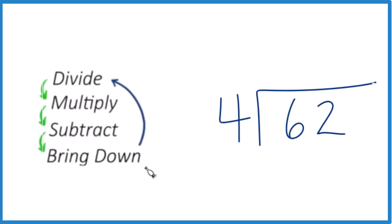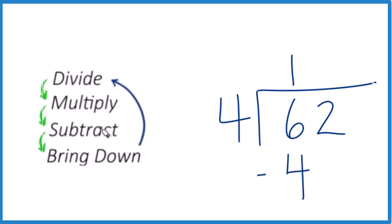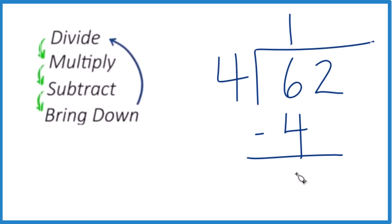So here's how you do long division. First thing, we divide. 4 goes into 6 one time. Then we multiply — 1 times 4 is 4. Then we subtract — 6 minus 4 is 2, and 4 doesn't go into 2. So now we bring down, bring that 2 down here, and we're back at the top.